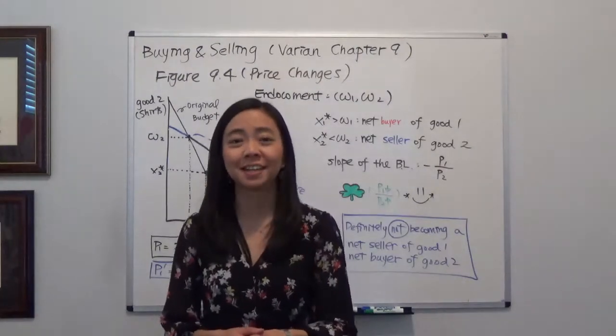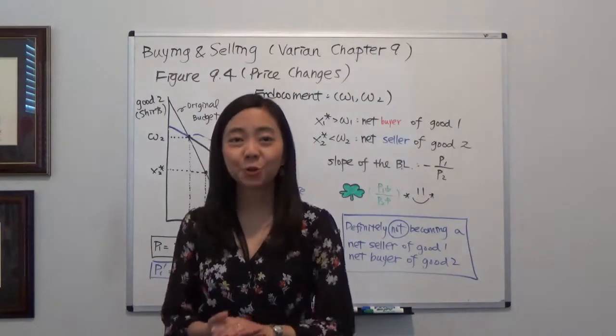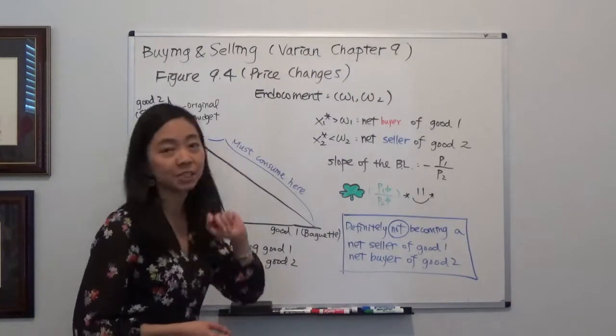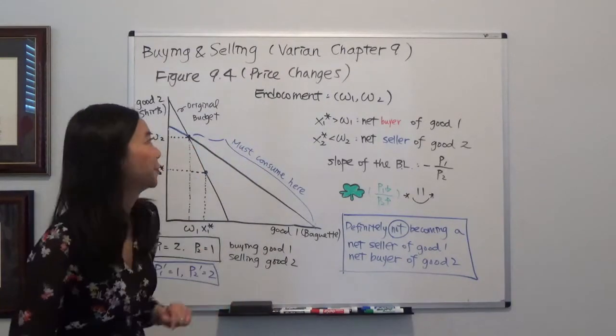Hello everyone! My name is Iris France. I'm your host. Today we're going to continue to talk about buying and selling. This is the whole Varian's book, Chapter 9, Figure 9.4.